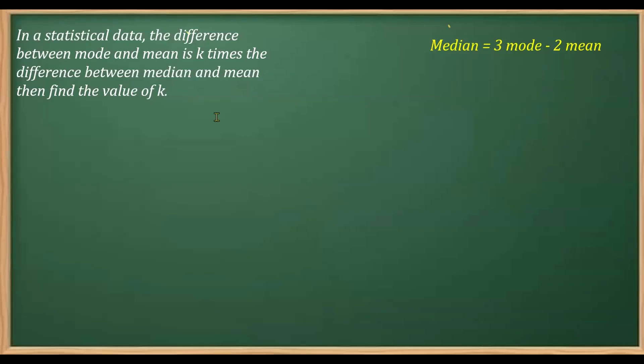This question from the chapter statistics is based on the relation between three central tendencies, measures of central tendency. And what is it? That is, we have median is equal to three times mode minus two times mean.